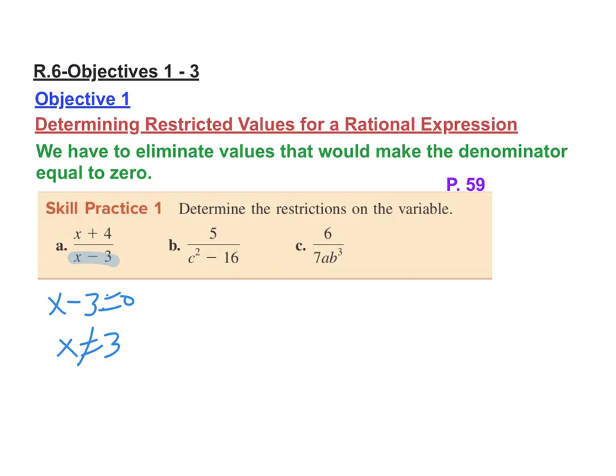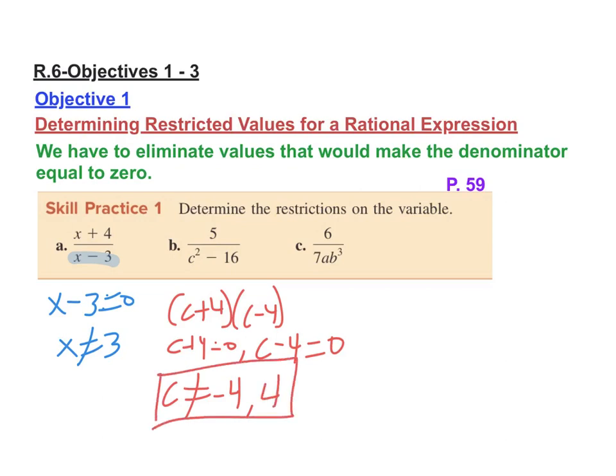For B, the first thing you need to do is factor this. So go ahead and do that. And then you're going to set all of its factors equal to zero and solve. Hopefully you recognize that this is a difference of squares. And so this ends up being factored as c plus four, c minus four. We set each of those equal to zero. So c cannot equal negative four and c cannot equal positive four. So those are the two values that c cannot be. That's the restriction.